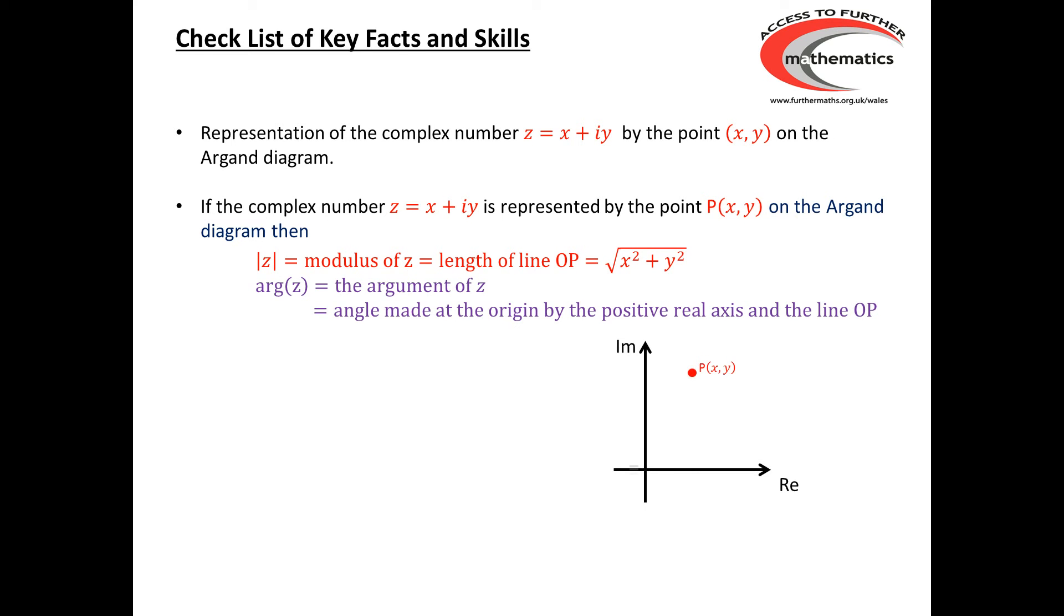So, if we have our Argand diagram with the point P, coordinates (x,y), representing the complex number z equals x plus iy, then the modulus of z is the length of the line joining the origin to the point P, and Pythagoras' theorem rapidly gives us that mod z must be the square root of x² plus y².